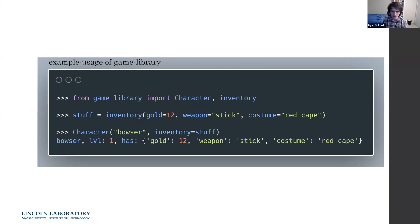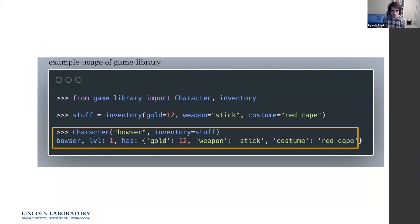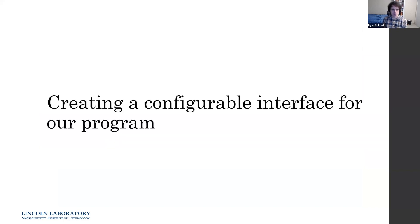Let's import Character and Inventory from our game library and use them. We'll call the inventory function to make some stuff — 12 gold, a stick, and a red cape. Then we'll make a character: Bowser, level one, with that inventory. So we have some library code, a toy problem, and now we want to create a configurable interface so we can configure any aspect of Character.